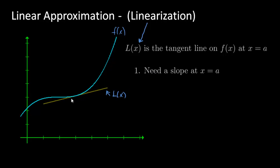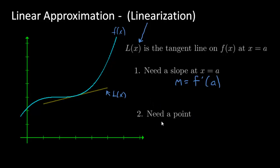Now if I want to find the equation of this tangent line, I need a slope. So M, which is the slope — that's using algebra, we used M — but now we're in calc so we're going to use f prime of a. That's going to be the same thing. Also to find the equation of a line, we need a point. Back in algebra you probably used x₀, y₀ or x₁, y₁, but now we're going to use a, because that's what x₀ is, and then f of a, which is its corresponding y value.